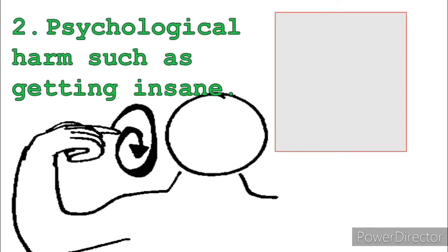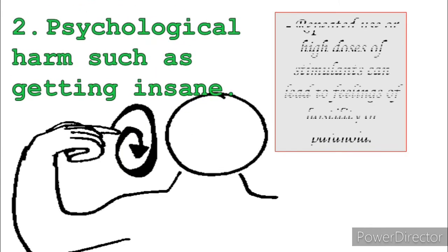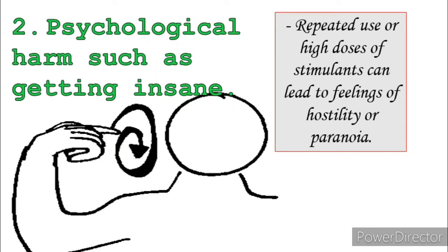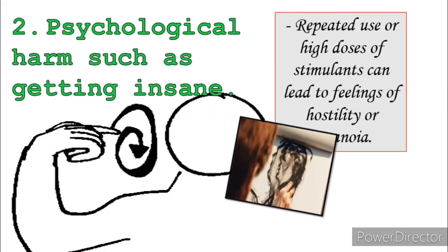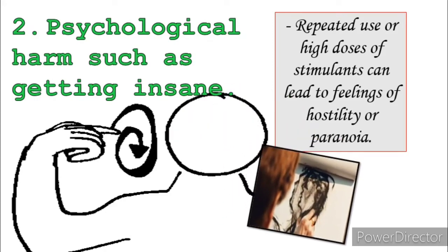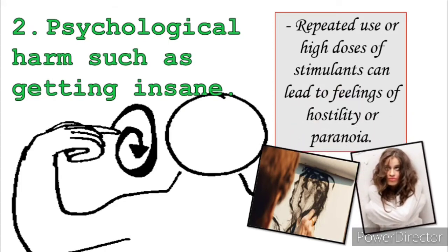Number two, psychological harm — such as getting mental illness. Repeated use or high doses of stimulants can lead to feelings of hostility or paranoia. Overdose of depressants or taking too many sleeping pills can cause delirium and worsen the symptoms of dementia. It can also give a person feelings of confusion, anxiety, and depression.